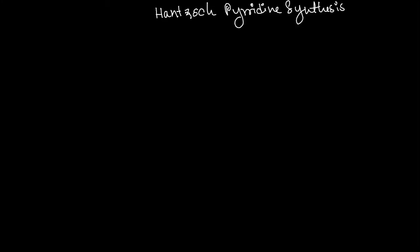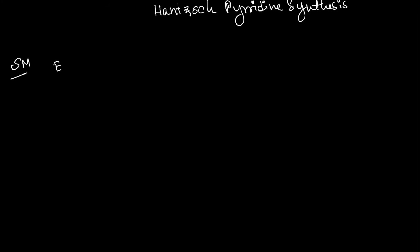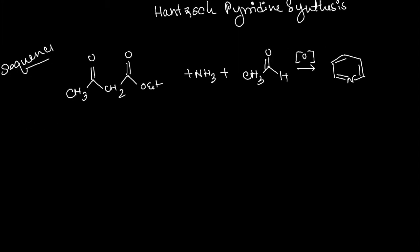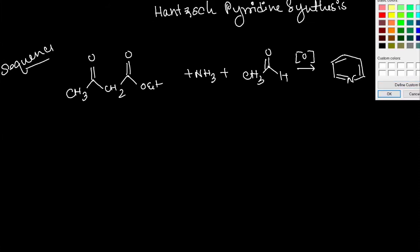Hello everyone, welcome to our chemistry. This video will be about Hantzsch pyridine synthesis. As starting materials, we need ethyl acetoacetate (CH3-CO-CH2-CO2Et), ammonia, and acetaldehyde.